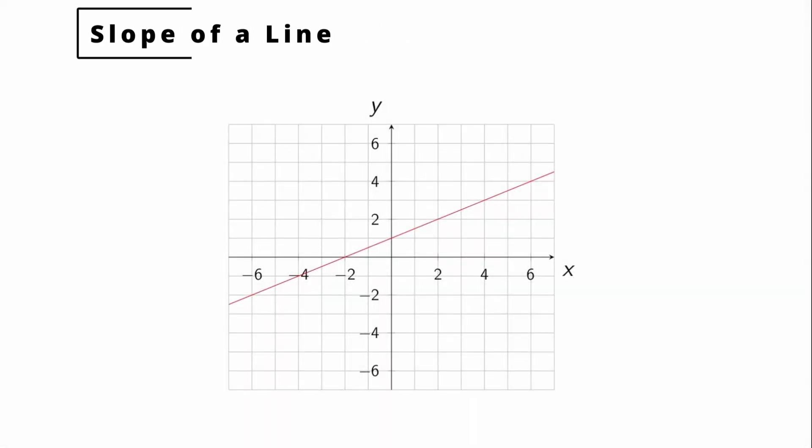Hello and welcome to another Orange Coast College mathematics video. In this video, we're going to learn to find the slope of a line. The slope of a line is the ratio of the vertical change to the horizontal change.